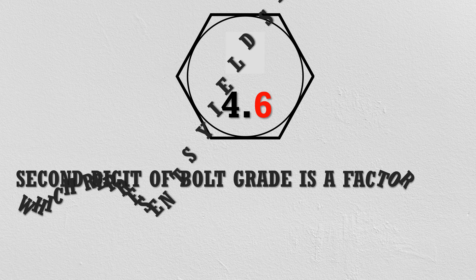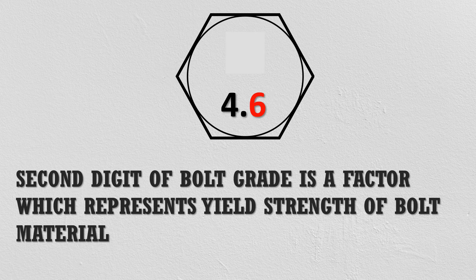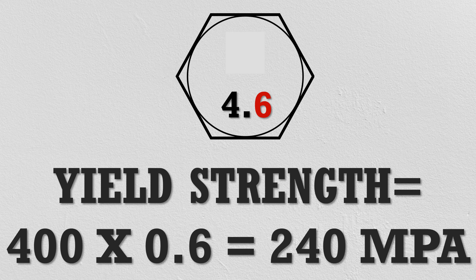The second digit of bolt grade is a factor which represents the yield strength of the bolt material. For example, a bolt having property class 4.6 means the yield strength of the bolt is equal to 60 percent of the nominal tensile strength, which is 240 megapascals.